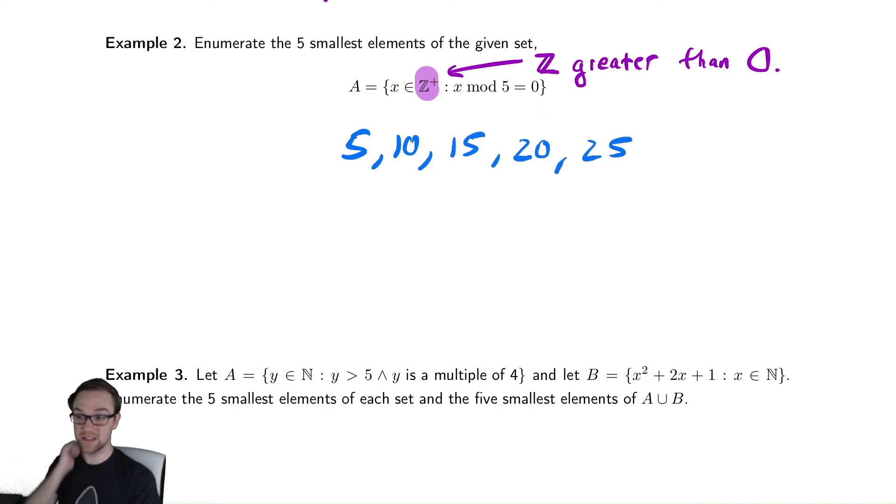Because this is the integers that are greater than zero, zero is not in that set, even though the remainder when you divide zero by five is zero.